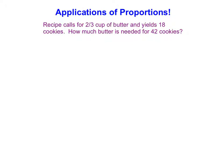So example two, we read through this and it says a recipe calls for two-thirds cup of butter and yields 18 cookies. How much butter is needed for 42 cookies? Now, again, I know that baking is proportional. If I were to bake, I would take a smaller recipe and multiply everything by a consistent number to help me get the number of cookies that I want. So I know proportions apply when we're dealing with recipes.